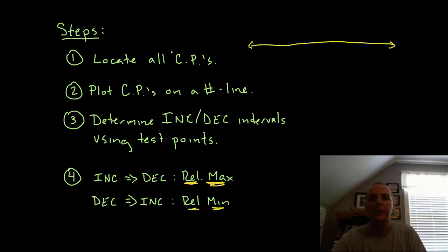So step one is to find your critical points because if you have a relative extrema they're going to happen at critical points. Now we'll just make up, let's say it's negative 2 and 5, let's say those are critical points.